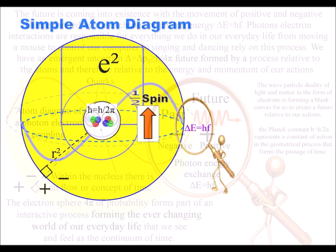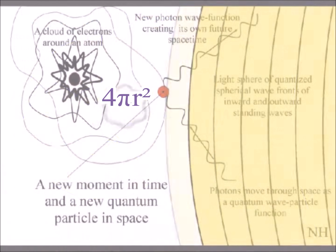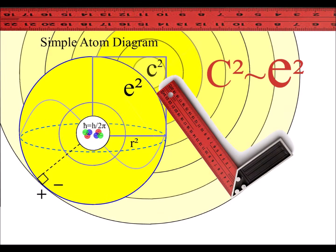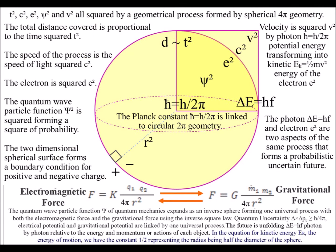The two-dimensional surface of the sphere also forms a boundary condition, or manifold, for positive and negative charge. Because the process is relative to the spherical surface, we have to square the radius. This can be seen in the equations of physics, with the speed of light squared, the electron squared, and the wave function squared.